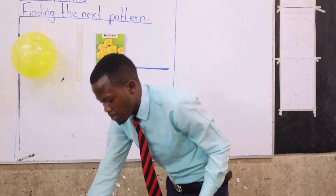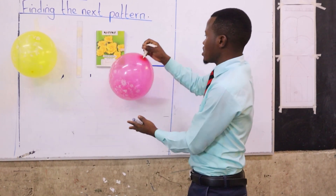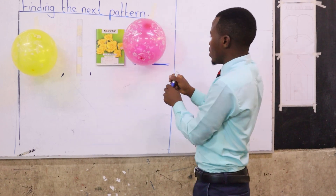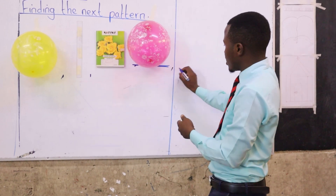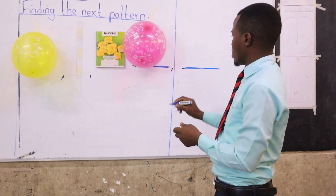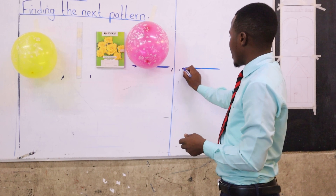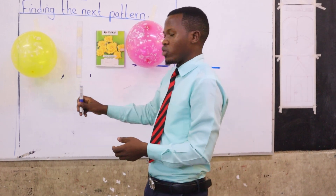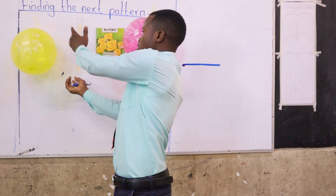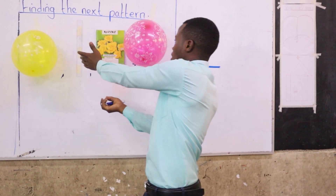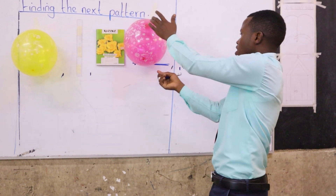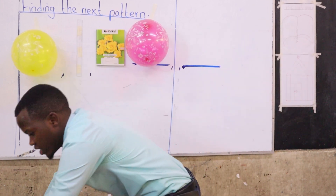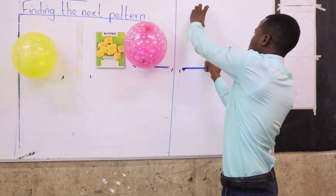So the balloon will be our next item. If I put another dash here and asked you to get the next pattern: balloon, ruler, book, balloon — the next one will be a very good — ruler! Are we together?